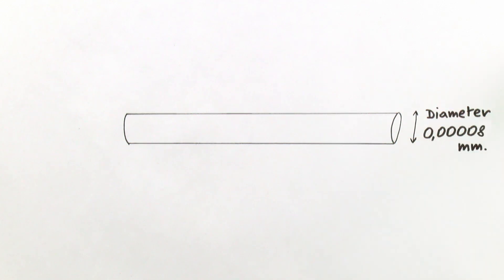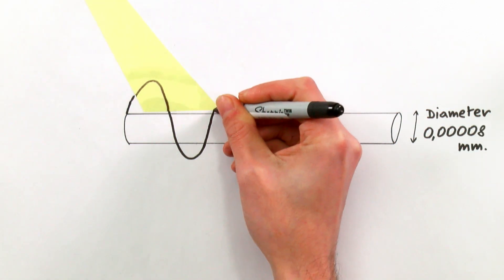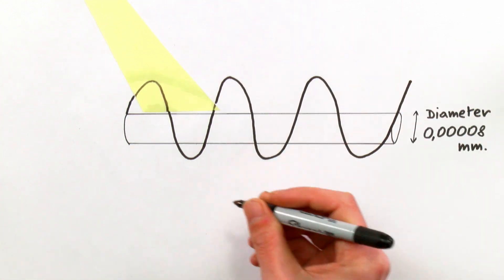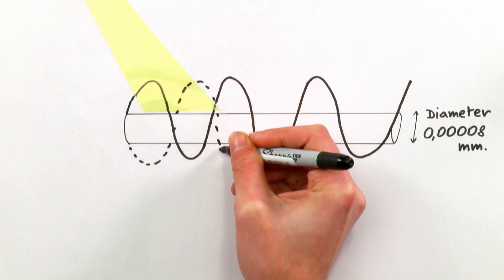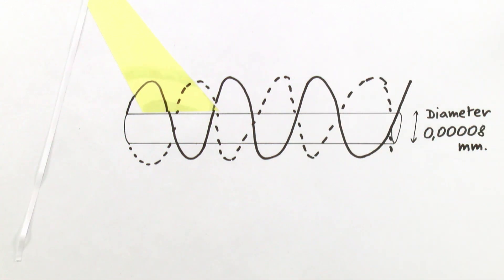First, the researchers shot a pulse of light onto a tiny metallic wire, basically trapping it there as a standing wave, a wave that doesn't change position over time. But remember, because of the wave-particle duality of light, the standing wave of light is also made up of particles, the photons.